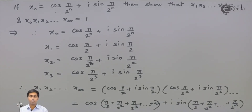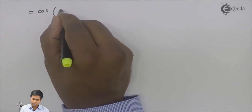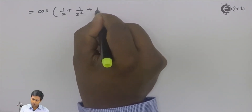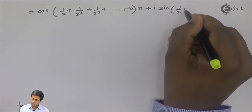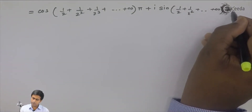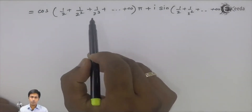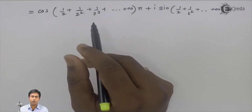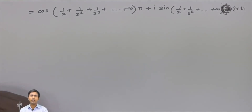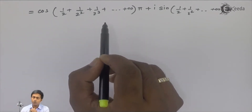So the expression becomes cos(π·(1/2 + 1/2² + 1/2³ + ... ∞)) + i·sin(π·(1/2 + 1/2² + 1/2³ + ... ∞)). The series inside is in geometric progression because the ratio between any two consecutive terms is constant — here the ratio between the first two terms is 1/2, and between the second and third term is also 1/2. So this series is in GP.